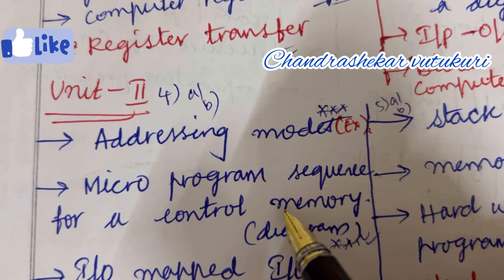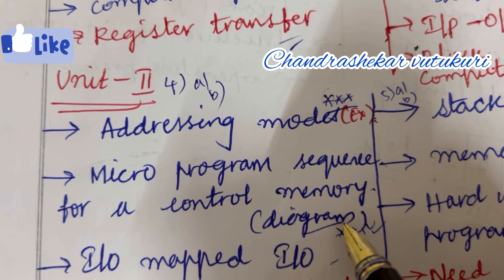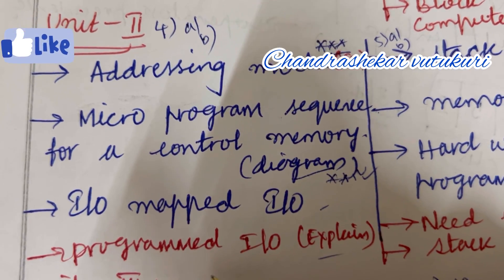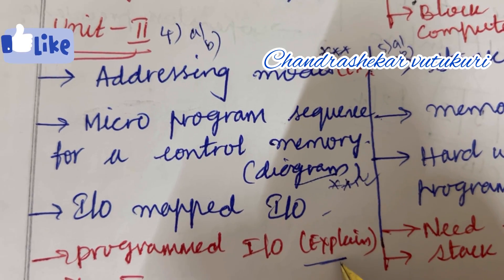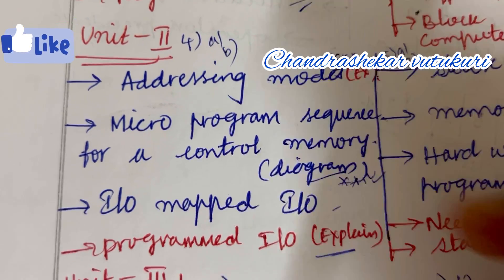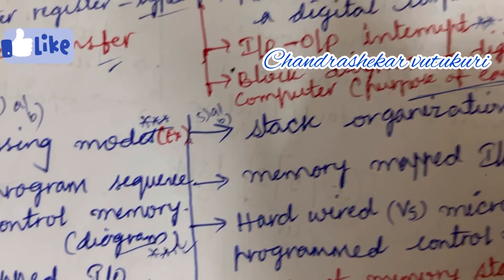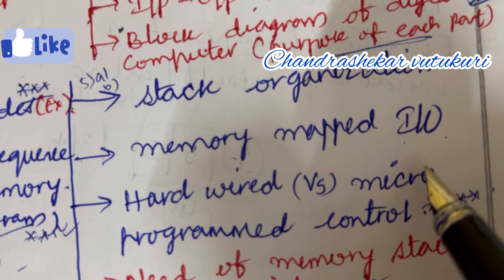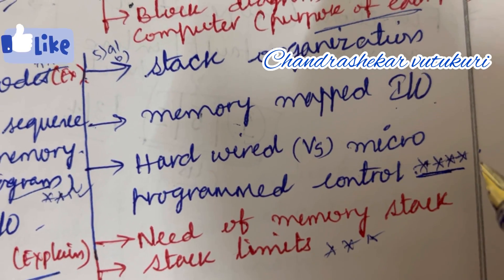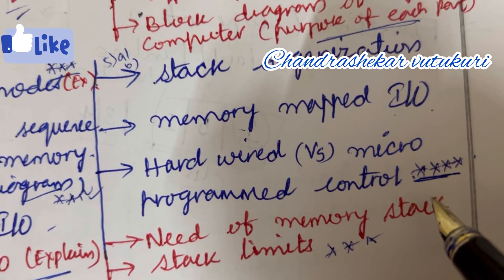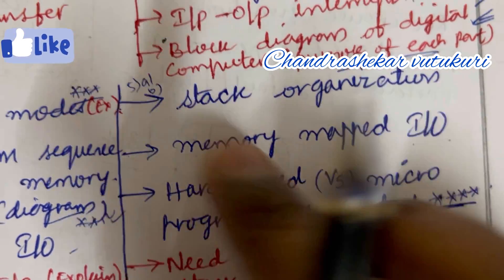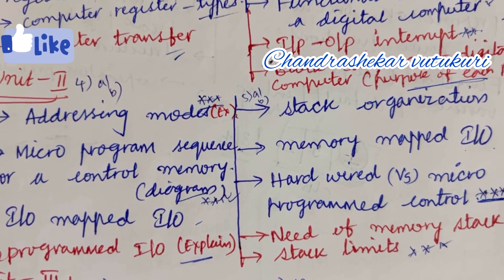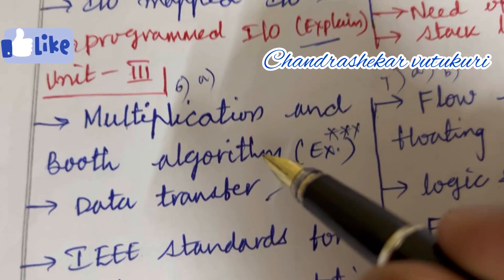For 4AB, addressing modes is set as the topmost question, along with micro-program sequence for a control memory with its diagram. All diagrams need to be labeled very clearly and drawn only in pencil. Programmed input-output — explain this term — may be a short question this time in 4AB. For 5AB, stack organization, memory-mapped input-output, hardwired versus micro-program control may be the topmost question. Need of memory stack as well as stack limits may be the short question in 4AB or 5AB.